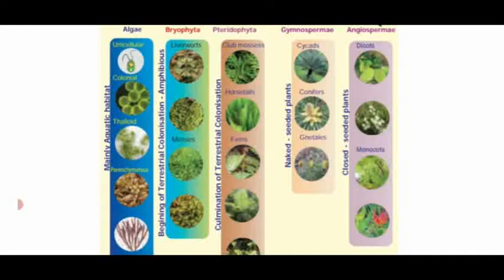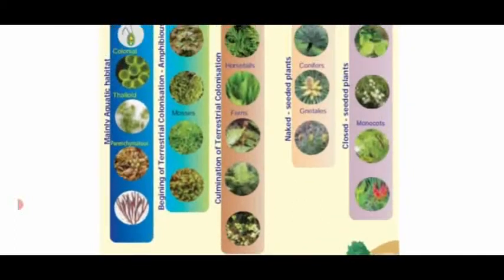Pteridophyta are also said to show terrestrial mode of colonization. They are divided into club mosses, horsetails (a plant that looks like a horse's tail, named Equisetum), ferns, and other plants.